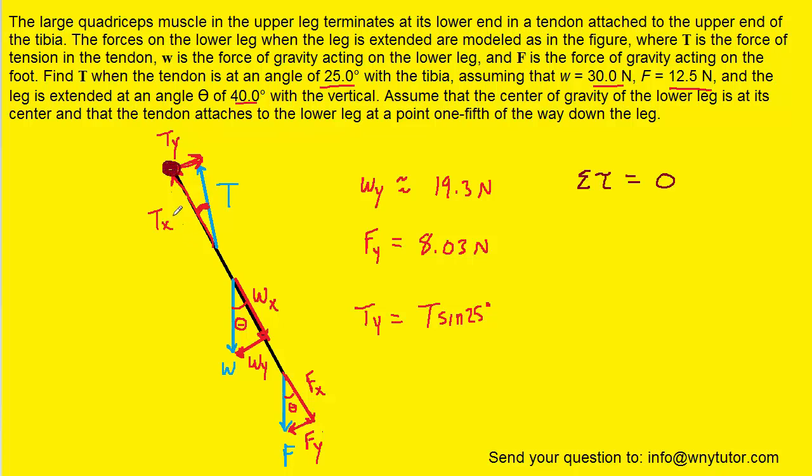Now what we want to note is that the x components of our forces, so Tx, Wx, and Fx, they all point along a line that passes through the pivot. That means that their torques will equal zero. So we can eliminate them from the torque equation. Therefore, only these three forces will produce torque.